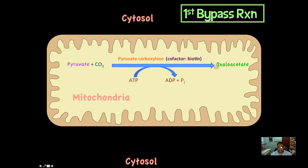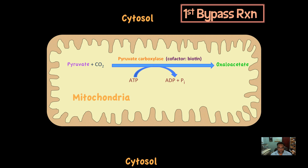Now we have formed oxaloacetate — but here's the dilemma. Oxaloacetate, once formed, cannot leave the mitochondria. It cannot pass through the mitochondrial membrane. The mitochondrial membrane is impermeable to oxaloacetate; there are no transporters for oxaloacetate. But we need to get that oxaloacetate outside to continue the other series of reactions.